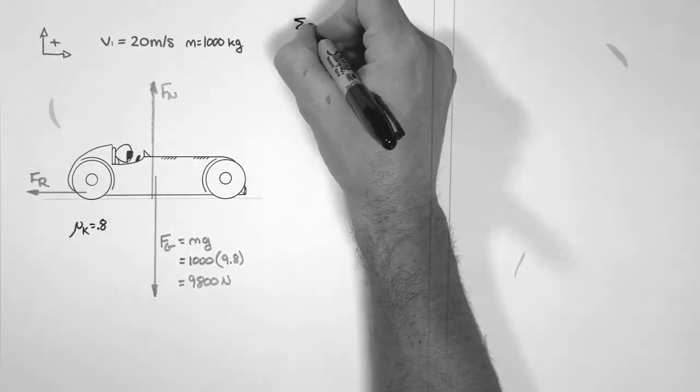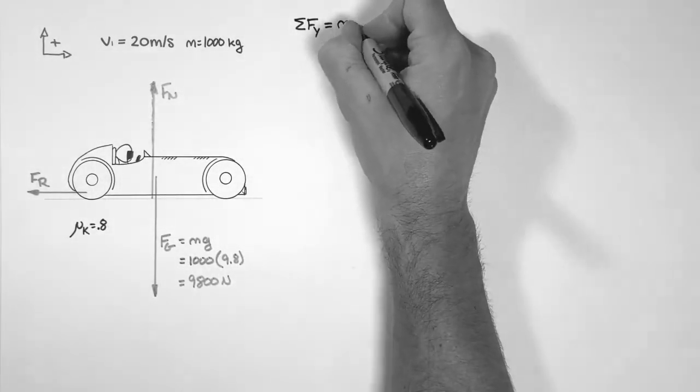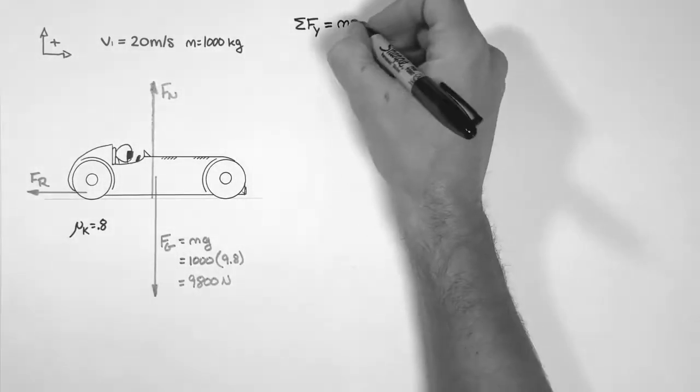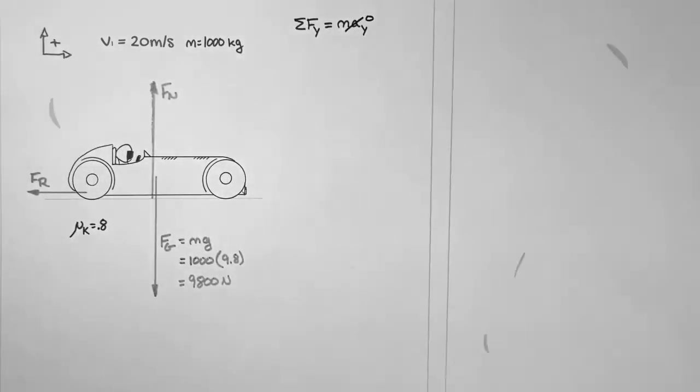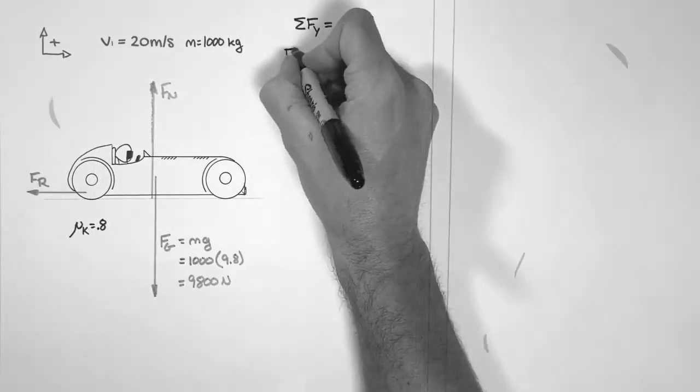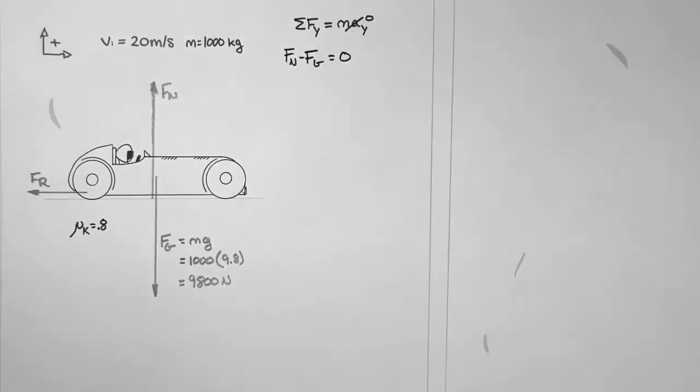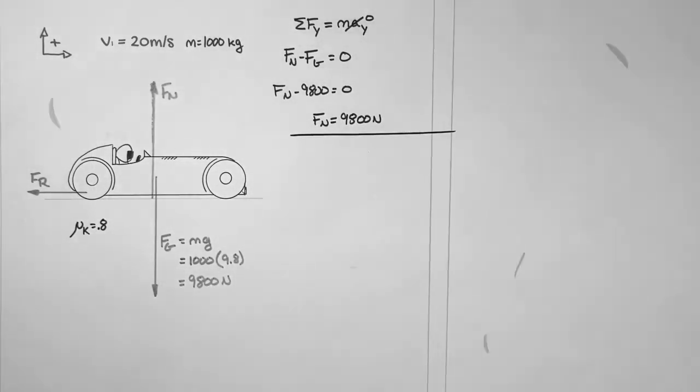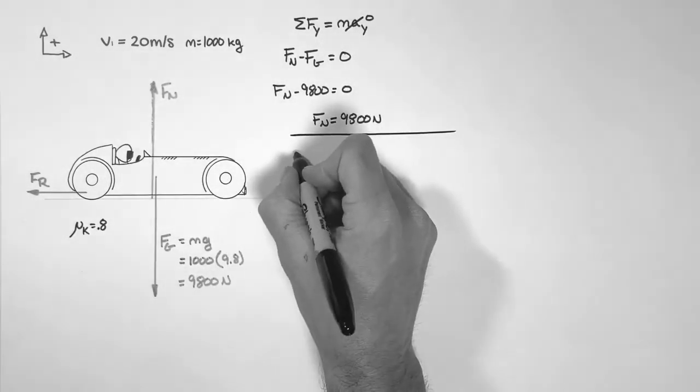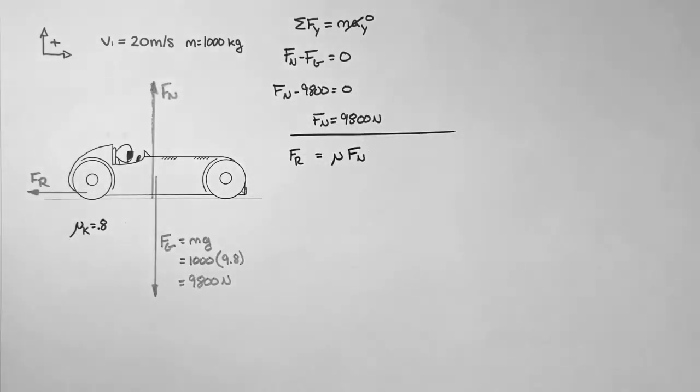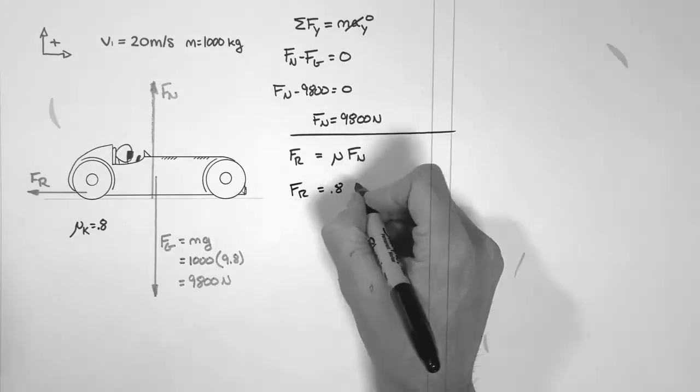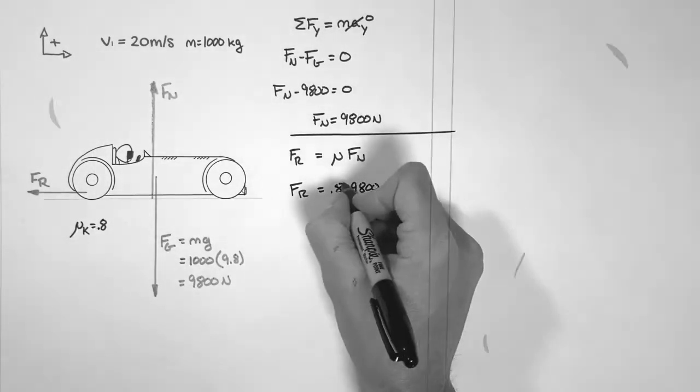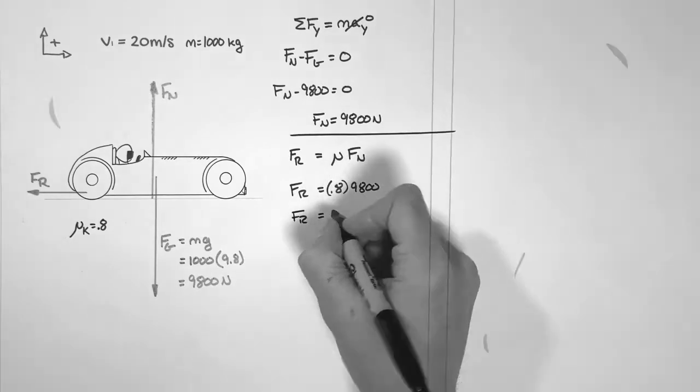Applying Newton's law on the y-axis, we can see that the sum of all forces has to equal 0, otherwise the car would take off like a rocket. So the normal force minus the weight must equal 0. This means the normal force is 9,800 newtons upward. We know friction is equal to mu Fn. So friction will equal 0.8 times the normal force, which is 9,800 newtons. This gives a friction force of 7,840 newtons.